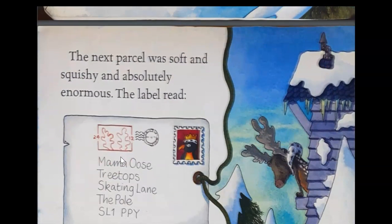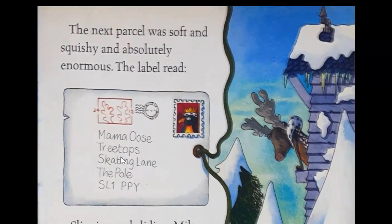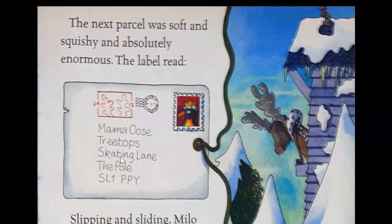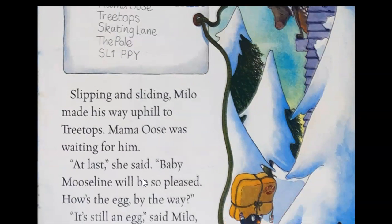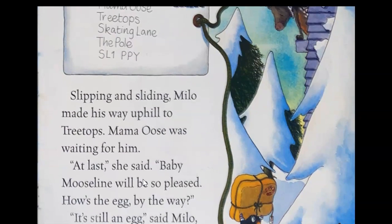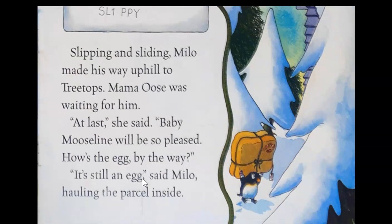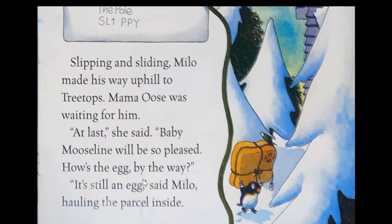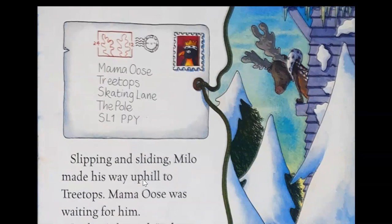The next parcel was soft and squishy and absolutely enormous. The label read Mama Oos, Treetop Skating Lane, The Pool, SL1 PPY. Slipping and sliding, Milo made his way uphill to Treetops. Mama Oos was waiting for him. At last, she said, baby Moose Line will be so pleased. How's the egg by the way? It's still an egg, said Milo, hauling the parcel inside. There's Mama Oos.